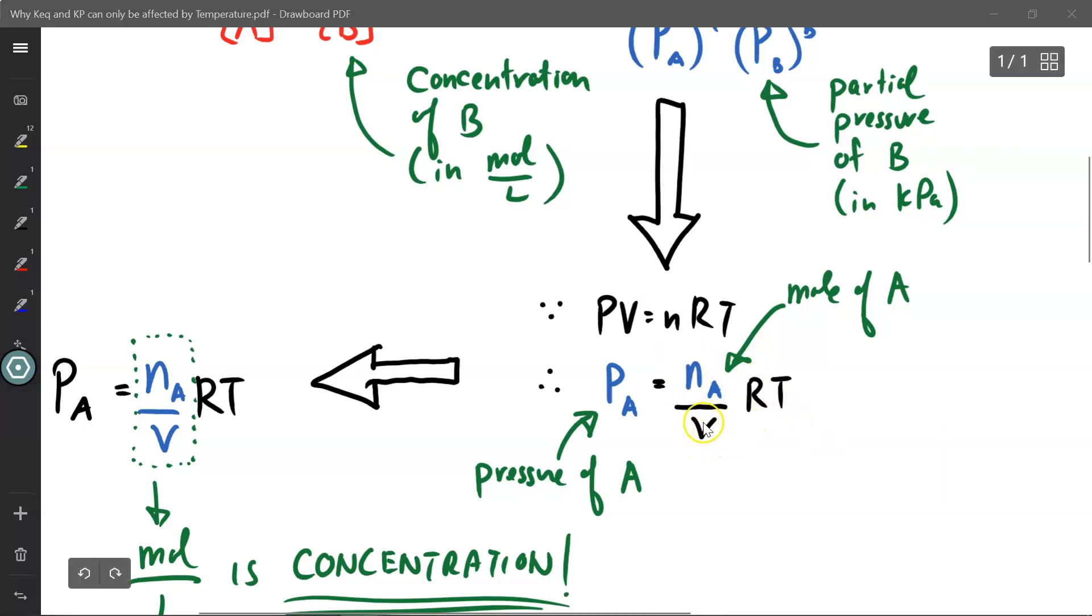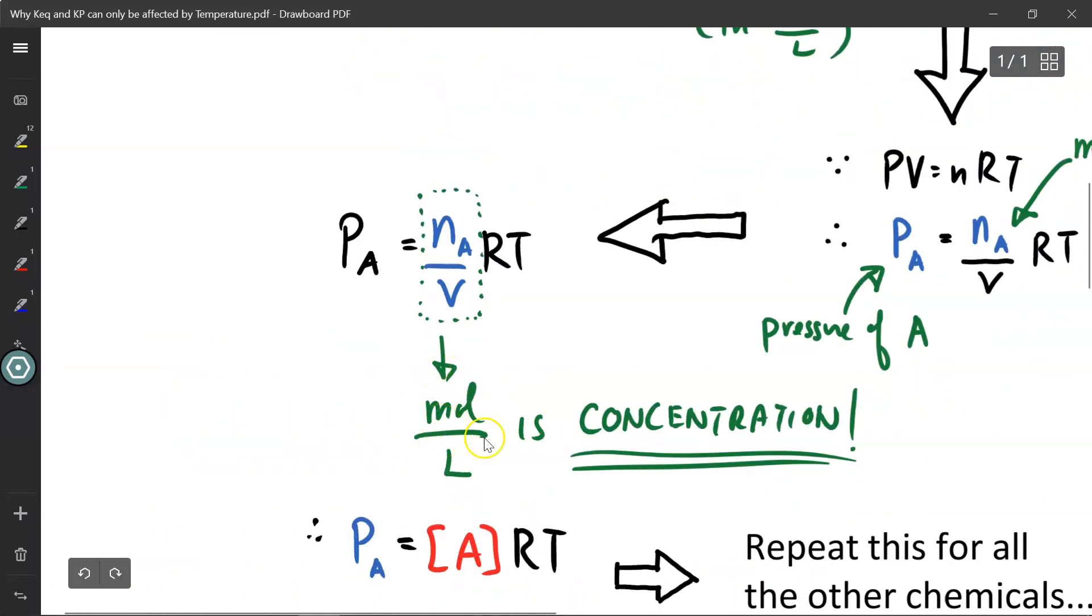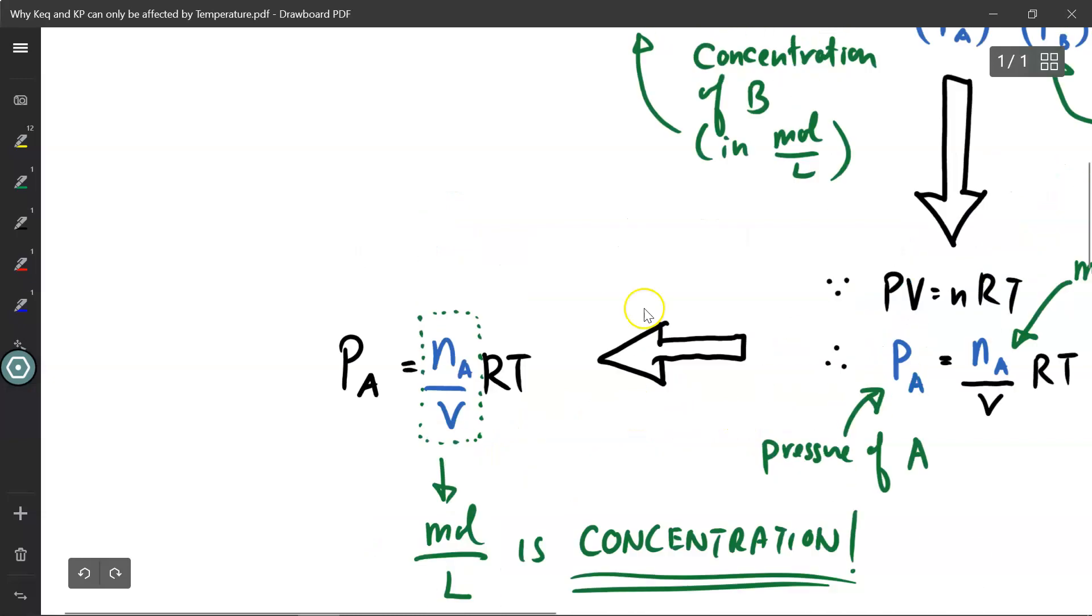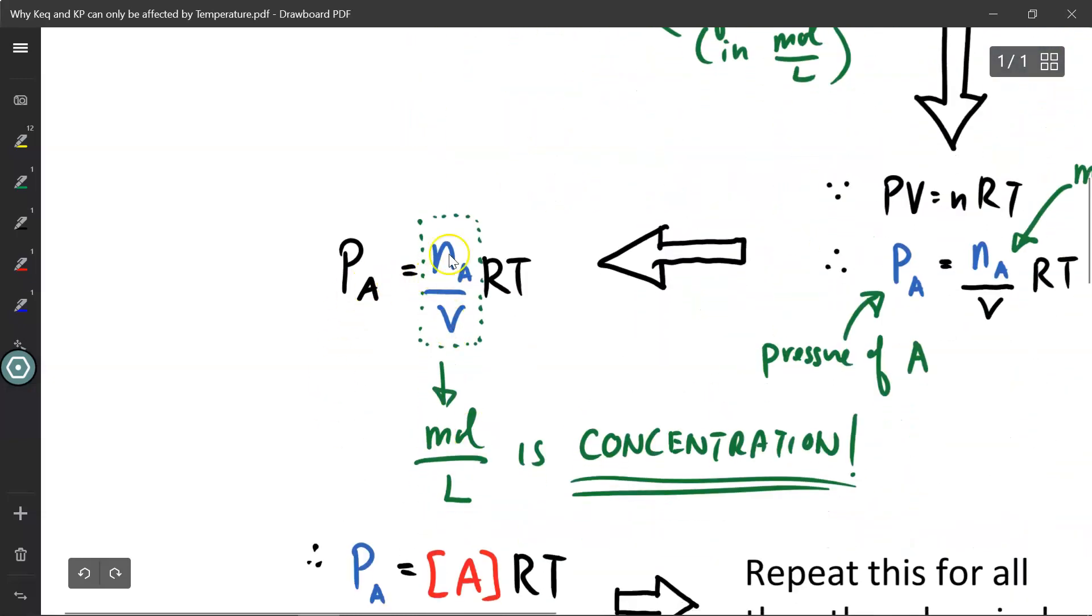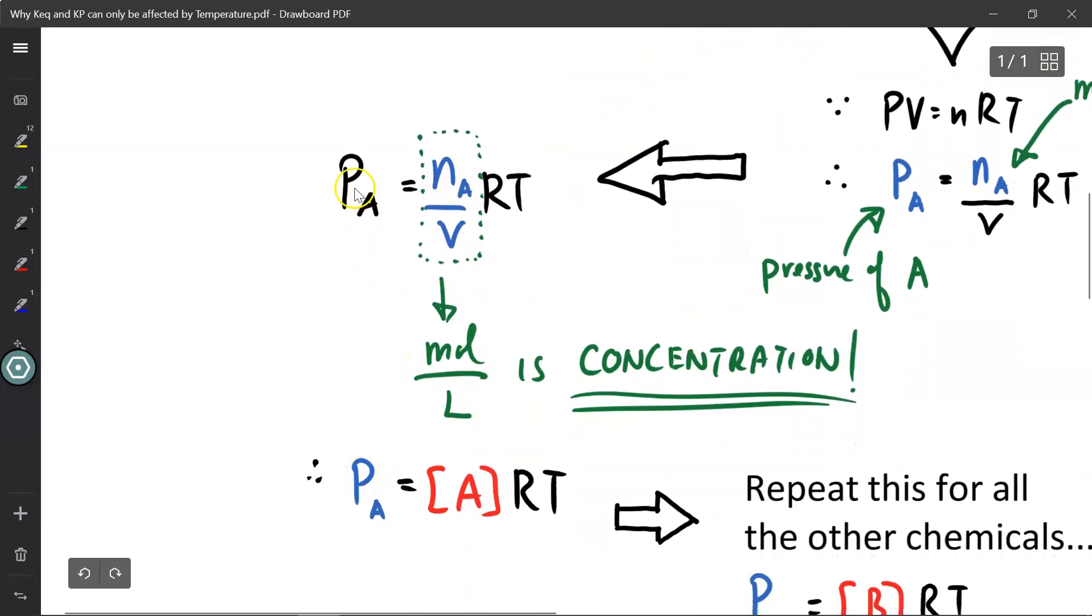Now if you look at this carefully, moles divided by volume, or in this case moles per liter, is concentration. So remember up here, concentration is measured in moles per liter. Well, n over V, moles per liter, that is concentration. So I can rewrite this equation as the pressure of gas A is equal to the concentration of substance A times RT.